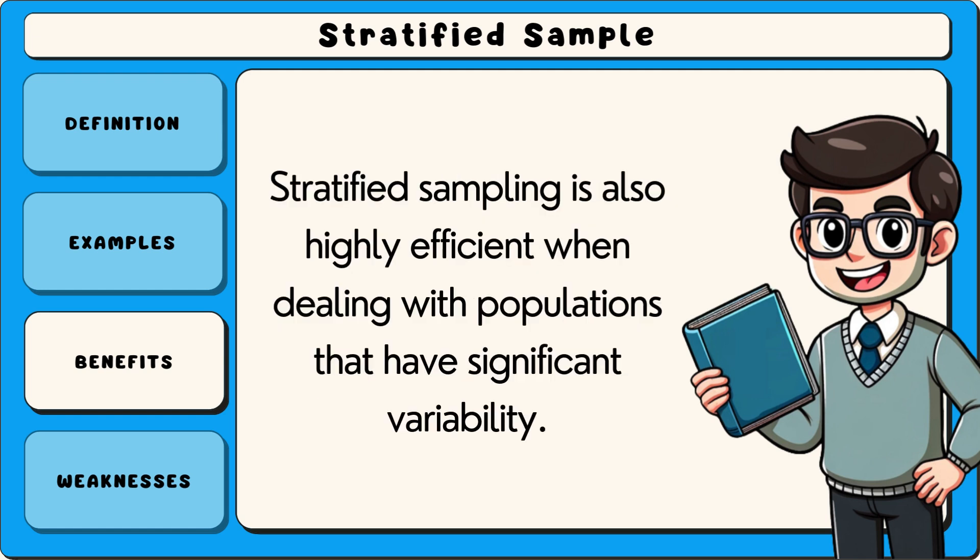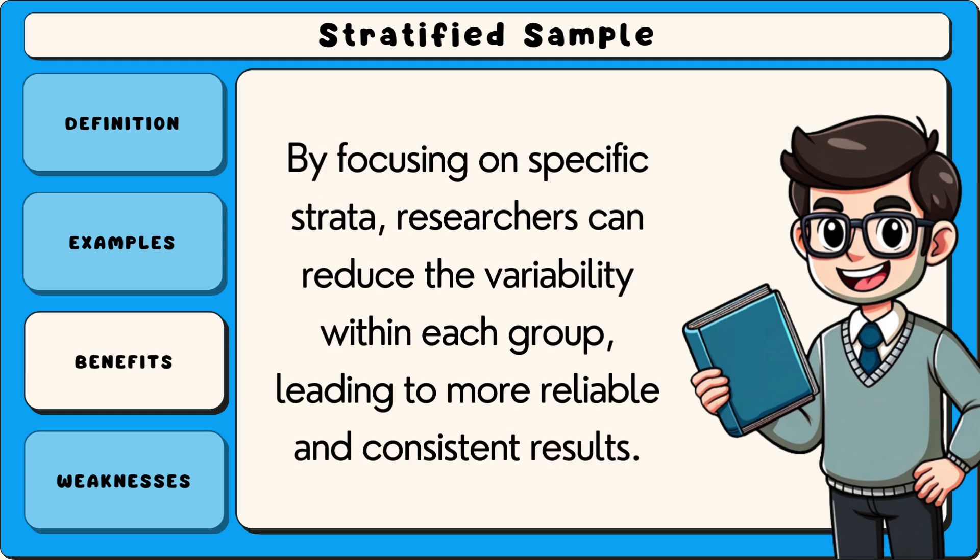Stratified sampling is also highly efficient when dealing with populations that have significant variability. By focusing on specific strata, researchers can reduce the variability within each group, leading to more reliable and consistent results.